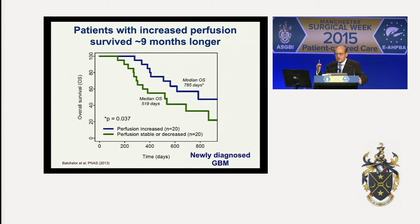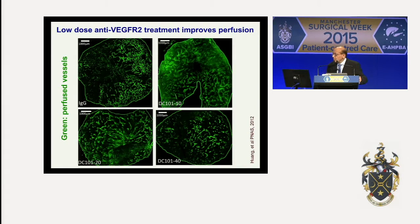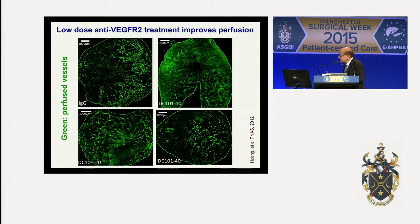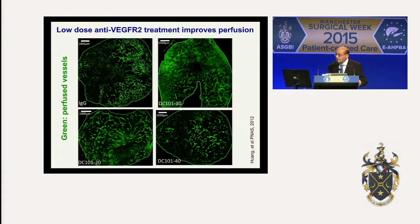Our hypothesis is that one way to increase perfusion in non-responding patients is to lower the dose of anti-VEGF agent. In a preclinical mouse breast cancer model, giving 40 mg of anti-VEGF receptor 2 antibody ramucirumab actually lowered perfusion compared to control. Lowering the dose to 20 mg showed more perfused blood vessels; lowering further to 10 mg showed even greater perfusion, suggesting that reducing the dose of anti-VEGF agent could increase perfusion in GBM patients who did not benefit. We are currently planning this clinical trial.